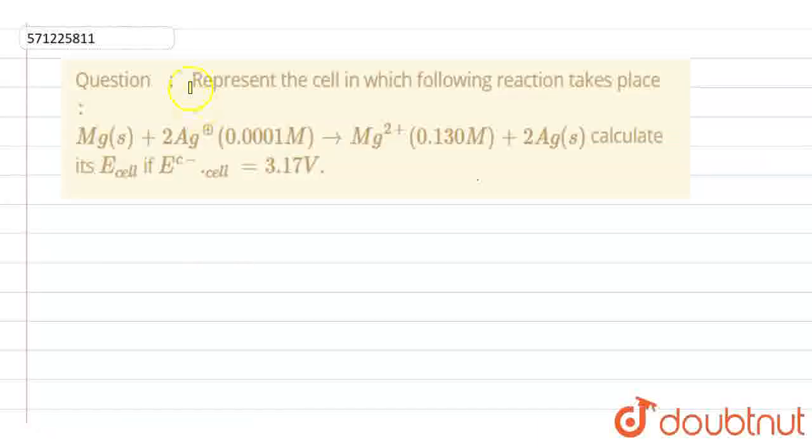Students, so the question here is: represent the cell in which the following reaction takes place. And this is the complete reaction. E cell, if E not cell is equal to 3.17.